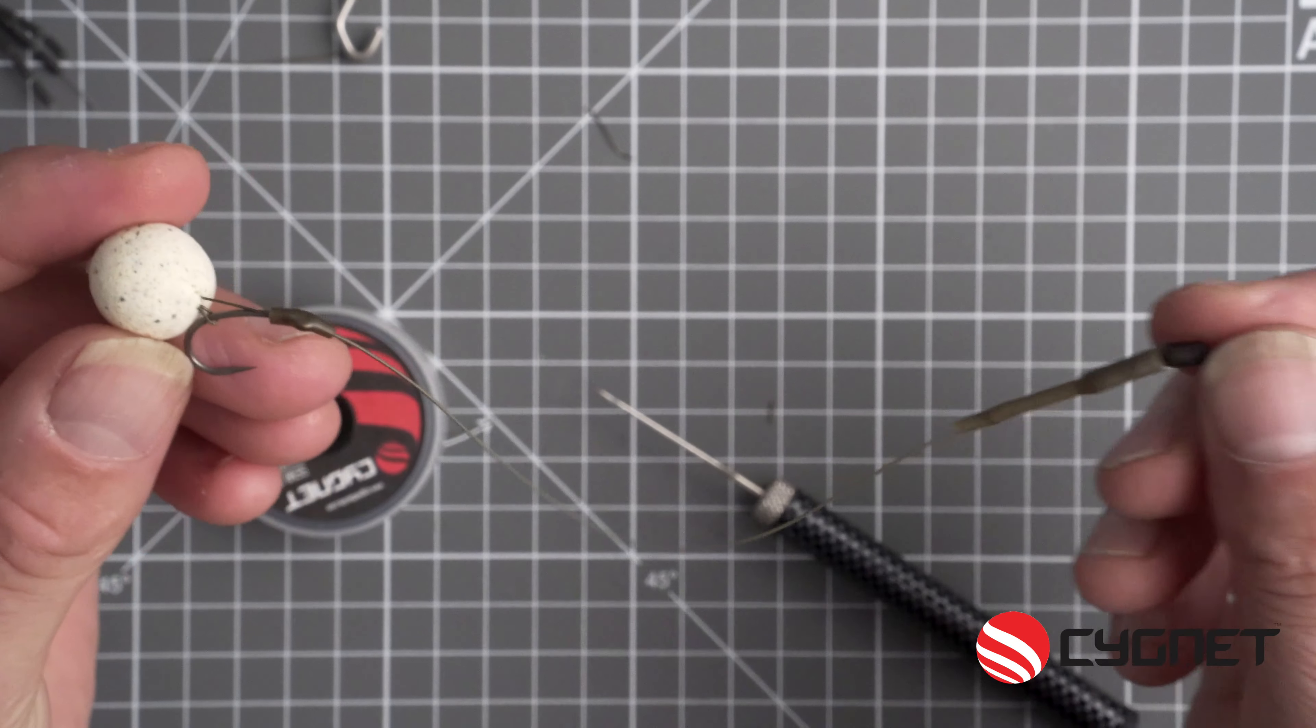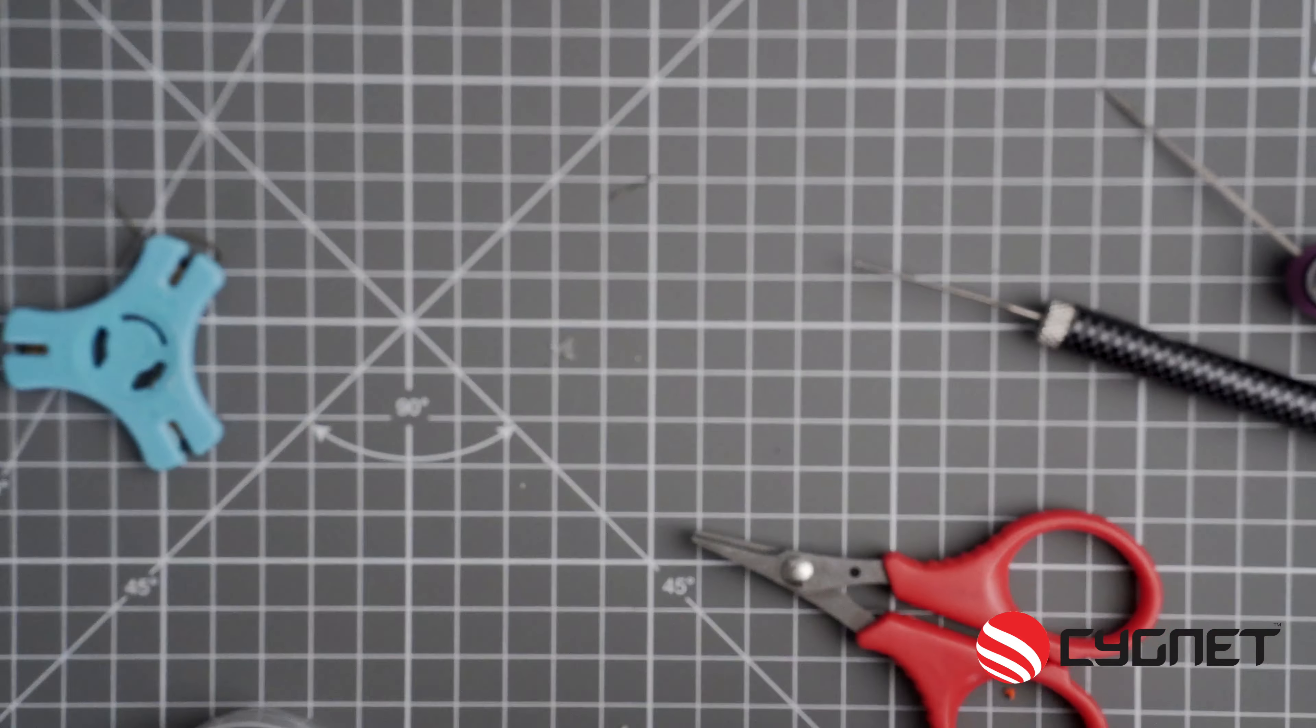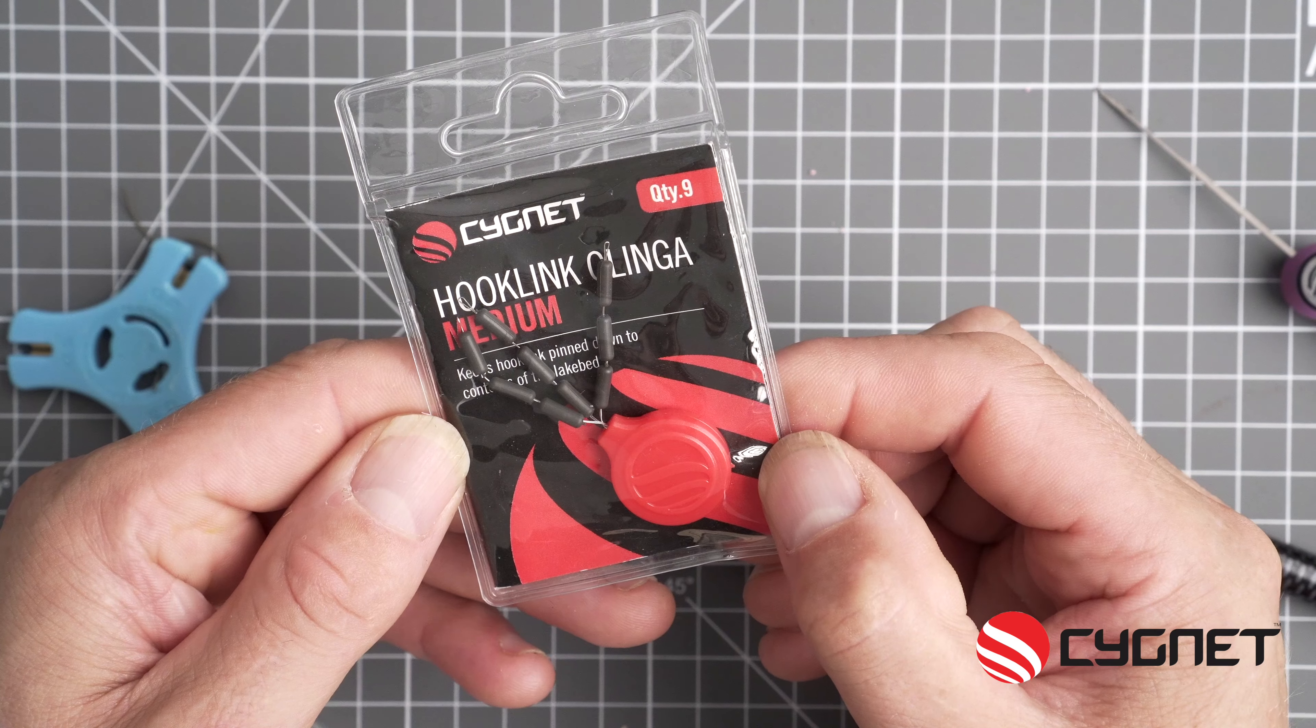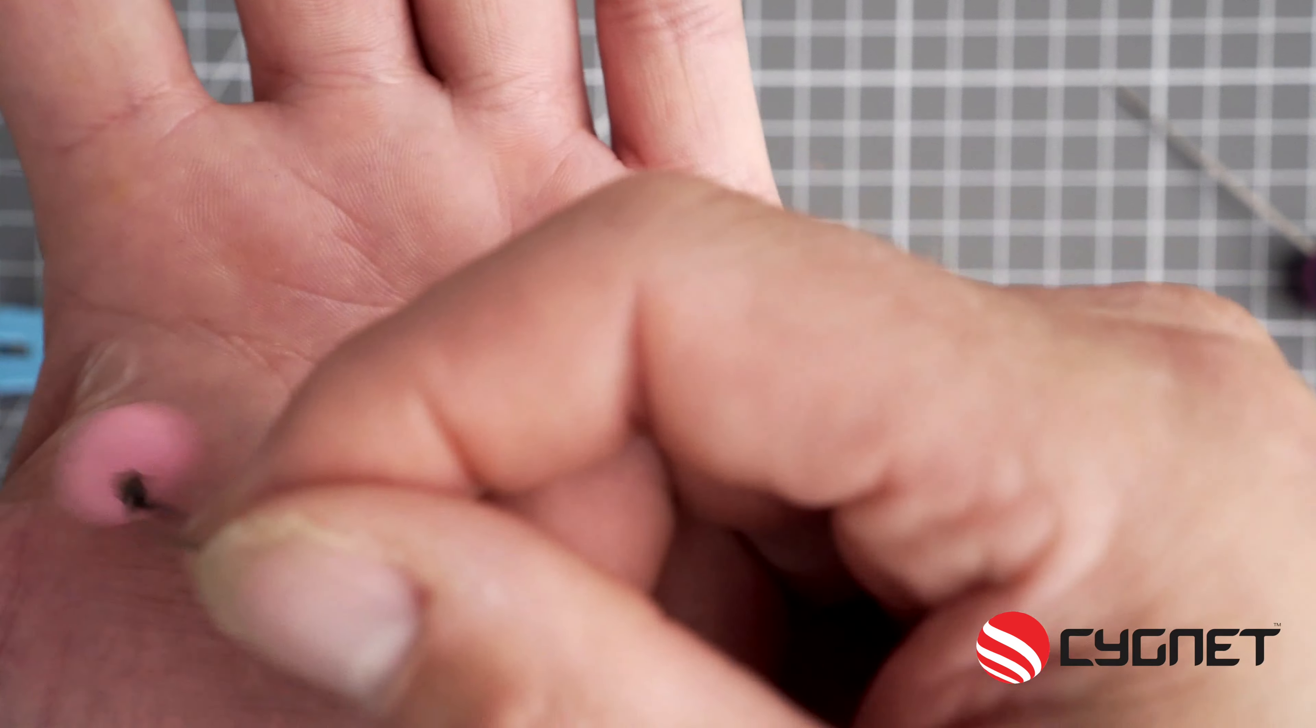Now you can do the same with a pop-up. I'm using a 12mm pop-up and I need to put a counterbalance on, so I'm using a little hook link clinger, and there you go, I've converted it into a pop-up rig.